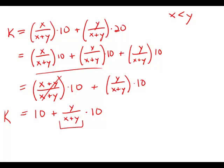Second of all, this fraction has to be less than 1, because there's no way that y can be bigger than x plus y, because x is a positive number. So, in other words, we know that k has to be bigger than 10, smaller than 20. So we've narrowed it down a little bit.